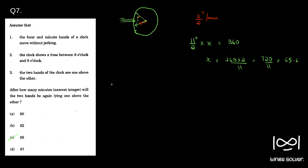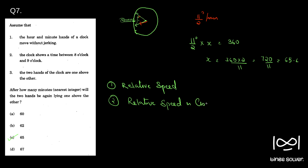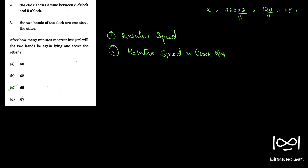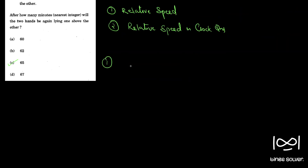For others, I will take some time to explain what the concept of relative speed is and how to use it in clock questions. Relative speed is used when two people or two objects move either towards each other — say one person moves at speed v1 and another at v2 — or when they move in the same direction. These are the two cases where we apply the concept of relative speed.